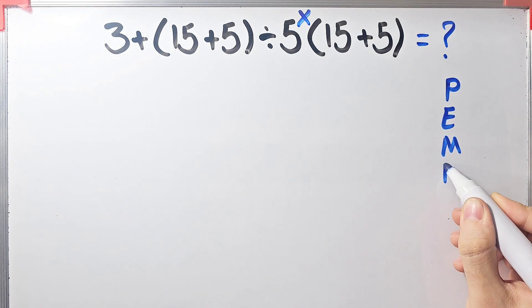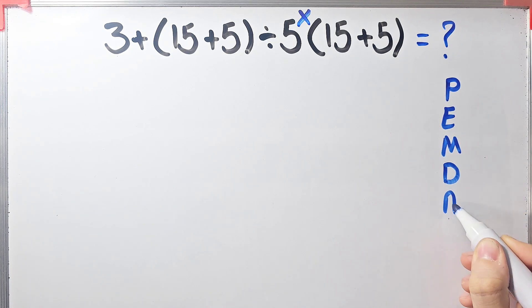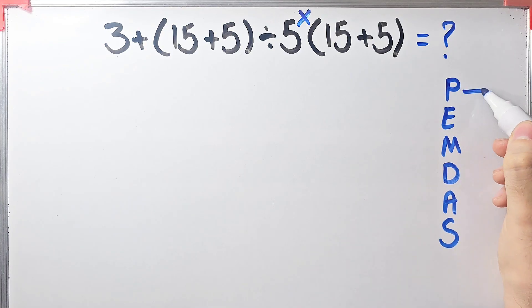And if you don't pay attention to this rule, you get the wrong answer. In this rule, P stands for parenthesis, E stands for exponent.